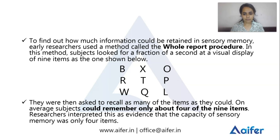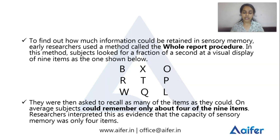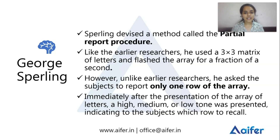In the whole report procedure, subjects are shown a 3x3 matrix briefly and asked to reproduce what they saw. Subjects could recall about 4 to 5 items. Based on this, scientists concluded that sensory memory capacity is around 4 items. Then Sperling introduced the partial report procedure as an alternative method.